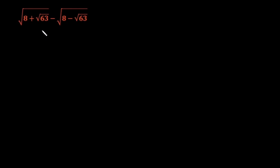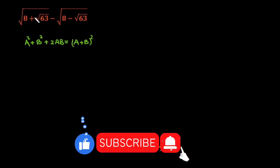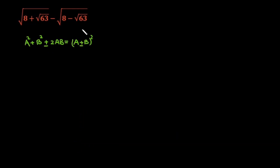Hello everyone. In this lecture we are going to solve this given nested radical expression: the square root of 8 plus √63 minus the square root of 8 minus √63. When you see a question like this, they are mostly the application of the algebraic formula a² + b² + 2ab = (a+b)². If there is a plus sign, use plus; if there is a minus sign, change accordingly. The first part — 8 — is my a² + b².